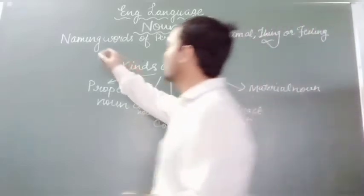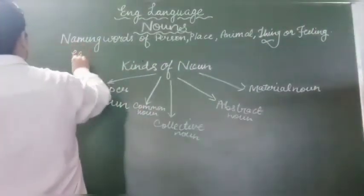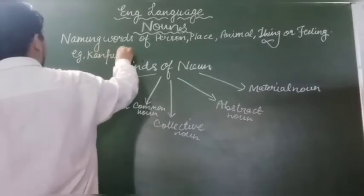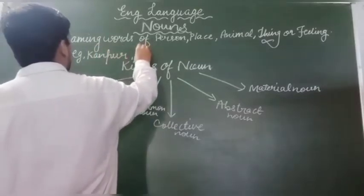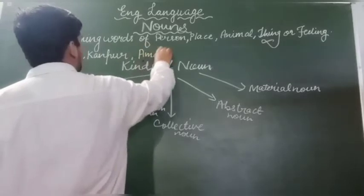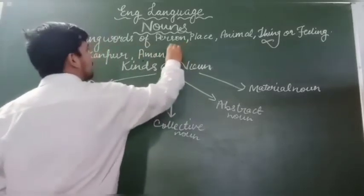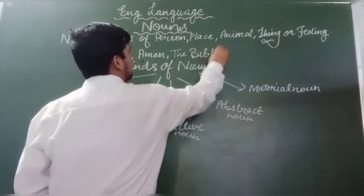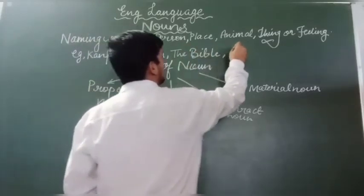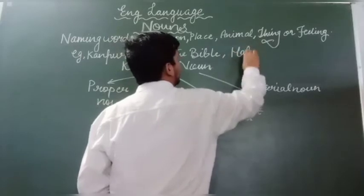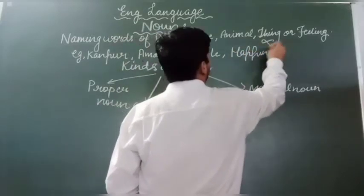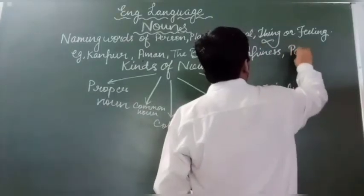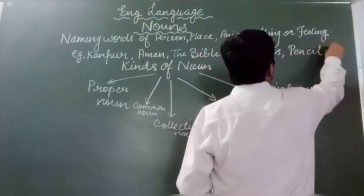Let me show you some examples so you can remember the noun words. These are: Kaanpur, Aman, The Bible, Happiness, Pencil, etc.